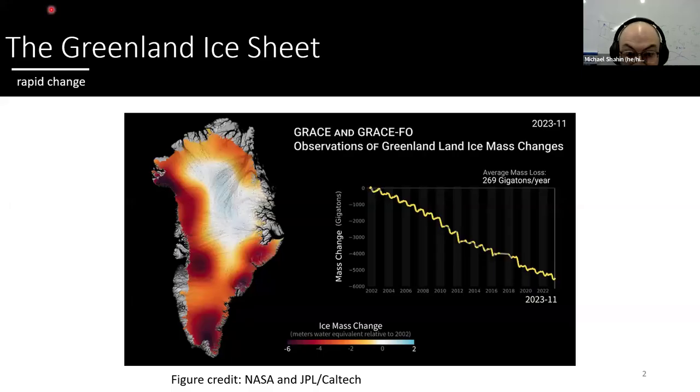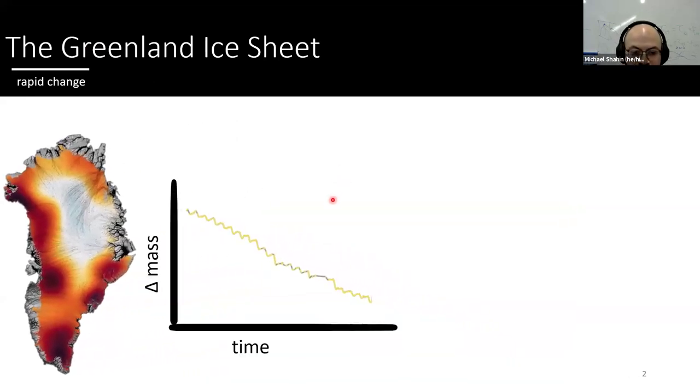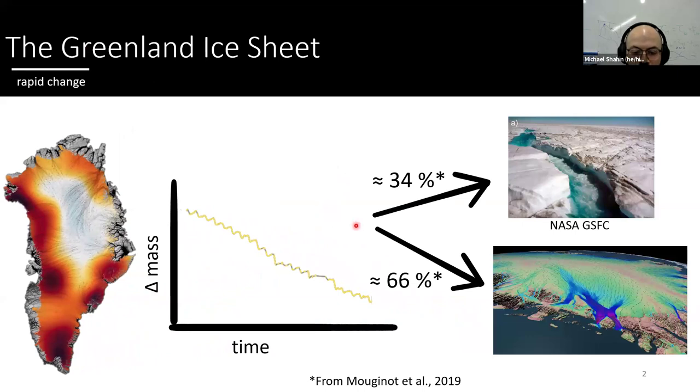So most of the people in this room know that Greenland's just losing a lot of mass. Specifically, the Greenland ice sheet holds about 7.3 meters of sea level rise and is currently losing about 269 gigatons of ice per year. And this is data from NASA's GRACE satellite missions, which measure changes in Earth's gravitational field. And this mass loss signal can be partitioned into two components.